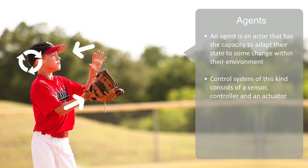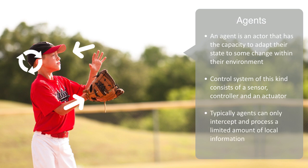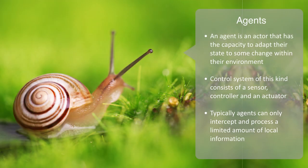It is the same process through which a bird in an ecosystem or a trader within a market is receiving information, processing it, and generating a response. Typically, these agents can only intercept and process a limited amount of local information. Like a snail following a trail on the ground, it does not have a global vision of the whole terrain around it, and it must simply respond to the local information available to it.